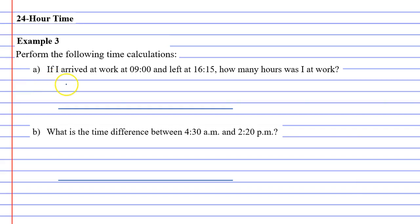So question A says, if I arrived at work at 900 hours or 9 a.m. and left at 16:15 hours, how many hours was I at work? To work these out, it really helps to have some sort of number line to help visualize exactly what's going on.